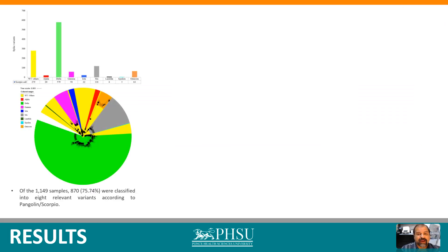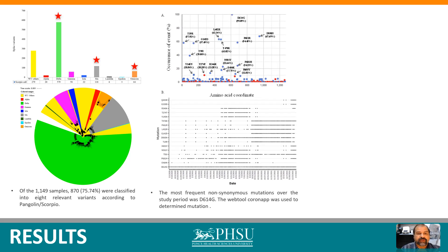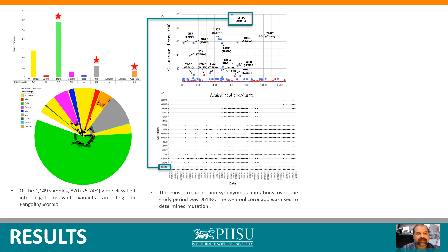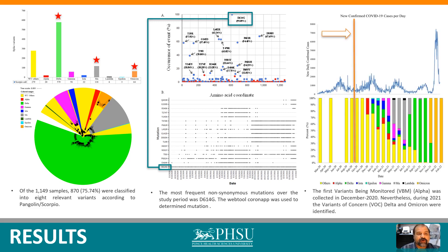Of the 1,149 samples, 75% were classified into eight relevant variants according to Pangolin/Scorpio. Delta is the variant with the most sequences, followed by Mu and Omicron variants. The most frequent non-synonymous mutation over the study period was D614G. This mutation is associated with increases in infectivity, rapidly spread around the world after its initial appearance, and interestingly remained in the new variants. According to our data, only wild-type virus — not included in any Variant Being Monitored or Variant of Concern — was observed in 2020, with the exception of Alpha, which was identified in December 2020.